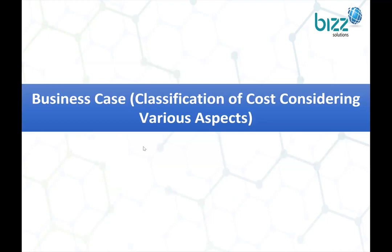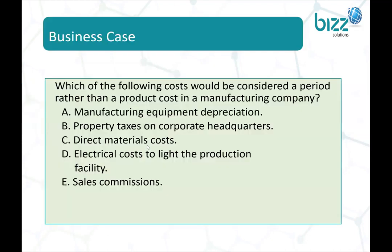In the beginning, we discussed a small business case. In the first business case, there was a question for students: which of the following costs would be classified or considered as period rather than product cost in a manufacturing company?